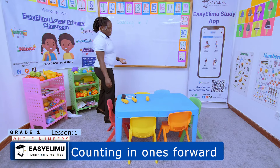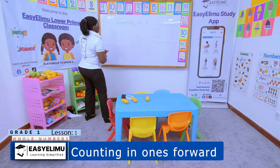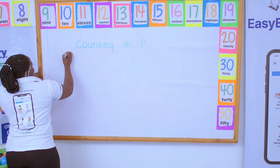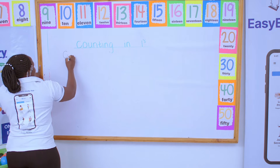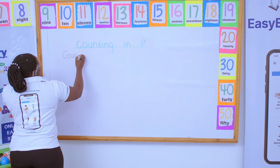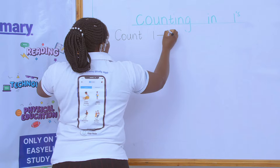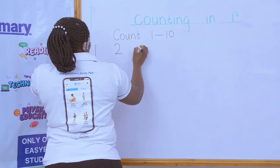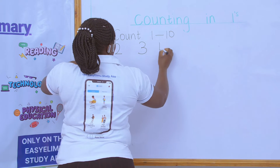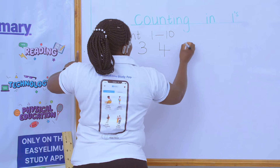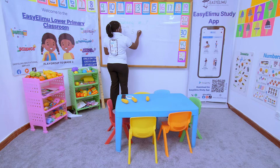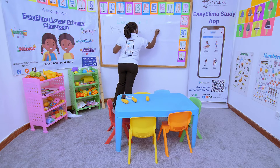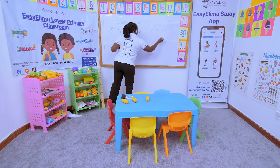So when you're supposed to count numbers to ten, we are just counting the numbers the way they are. So if the teacher says count one to ten, count one to ten — I was able to count one, two, three, four, five, six, seven, eight, nine, and ten.